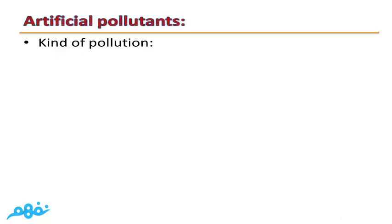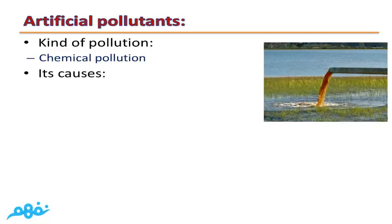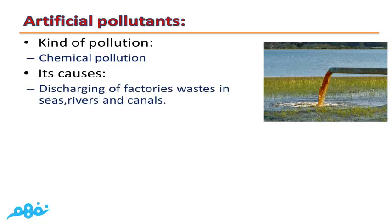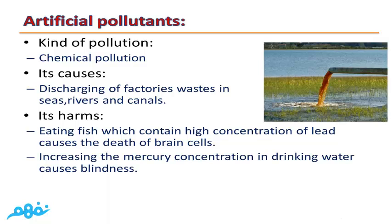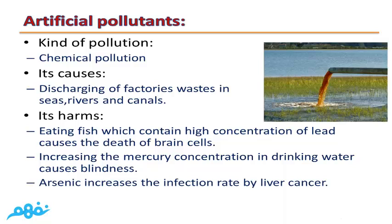The second type is chemical pollution. Its causes: discharging factory wastes into seas, rivers, and canals. Its harms: eating fish which contain high concentrations of lead causes death of brain cells; increasing mercury concentration in drinking water causes blindness; and arsenic increases the infection rate by liver cancer.